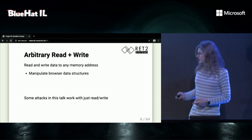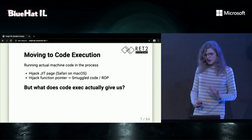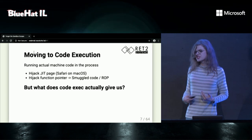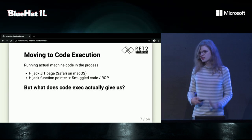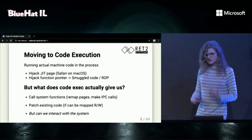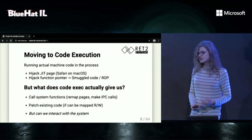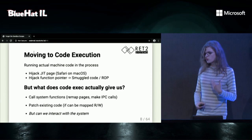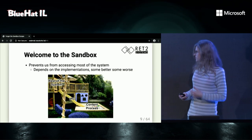We're going to look at attacks you can pull off with only read-write without needing full code execution. But often, attackers try to get full code execution, meaning they can actually run machine code within the rendering process — x86 on desktop, ARM on a phone. With code execution, they can call system functions and interact with the system, or try to patch existing code. But the question is: would you actually be able to interact with the system from code execution?